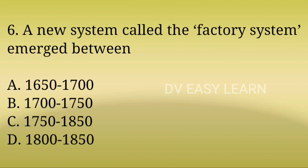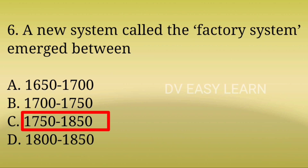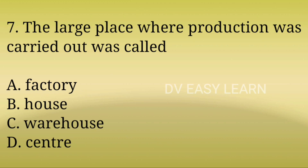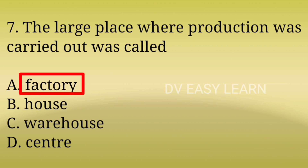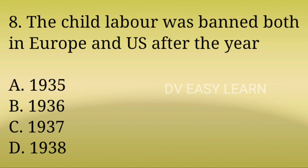6th Question: A new system called the factory system emerged between? 7th Question: The large place where production was carried out was called?